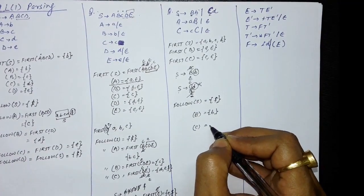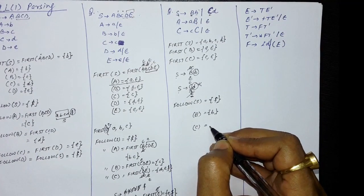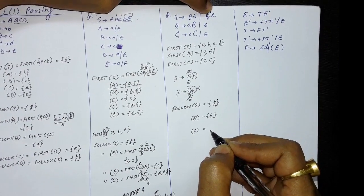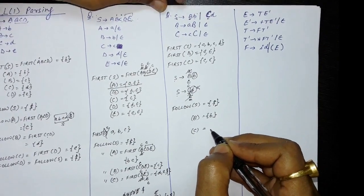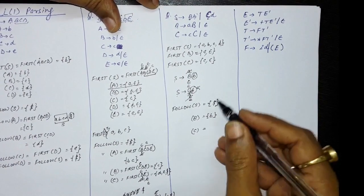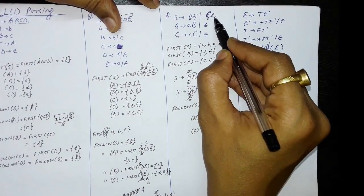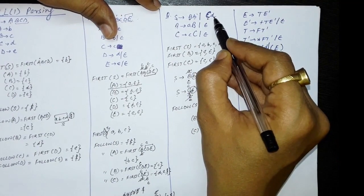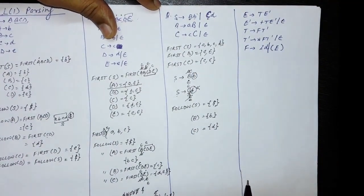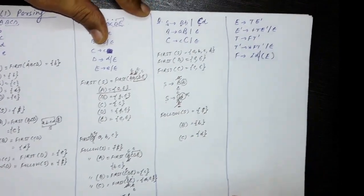For FOLLOW of capital C: find where C appears on the right hand side. It appears in S produces capital C small d. After C there is small d, so FOLLOW of capital C equals FIRST of small d, which is small d. So FOLLOW of C is small d.